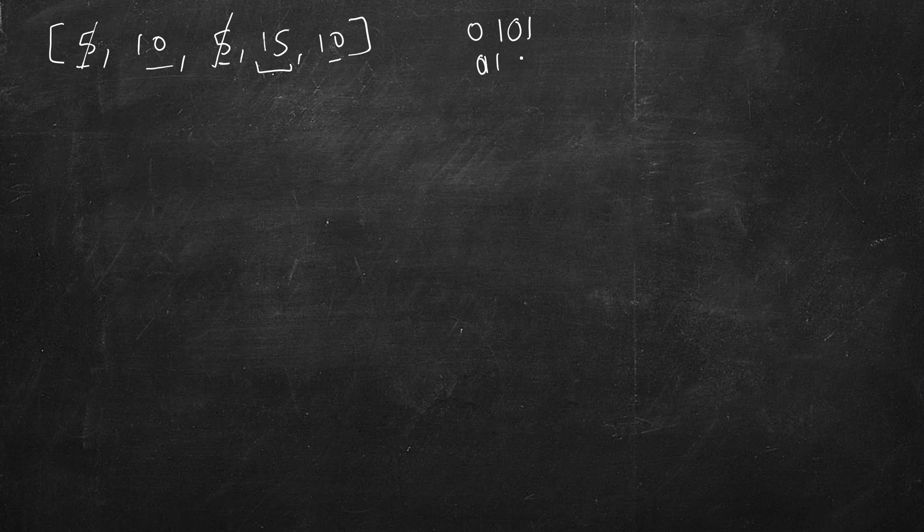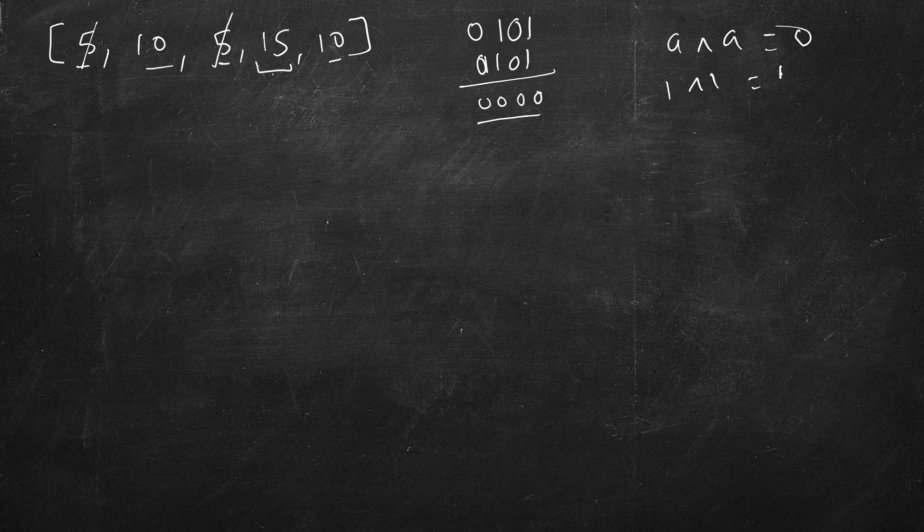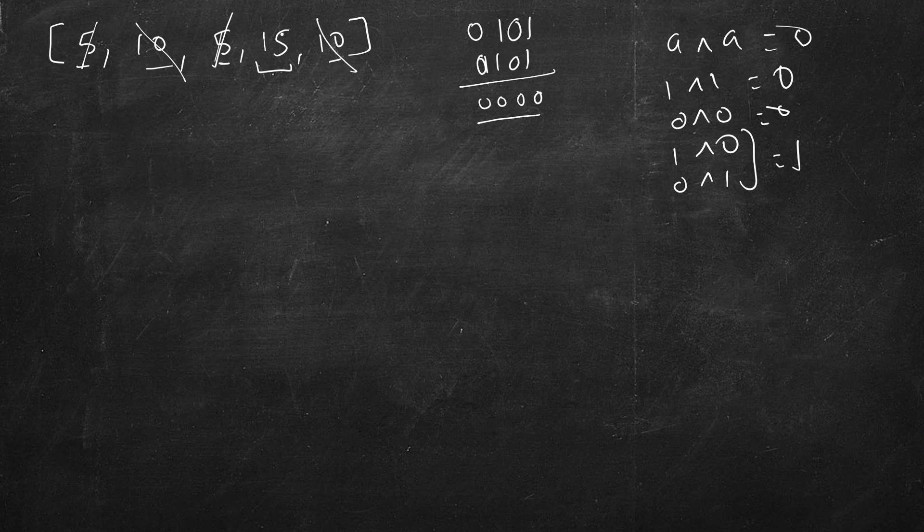So this 5 XOR 5, the bits will be 1 0 1. When we take XOR with 0 1 0 1, it will become 0 0 0 0. So a XOR a is 0, 1 XOR 1 is 0, 0 XOR 0 is 0, 1 XOR 0 or 0 XOR 1 is 1. We will use the same concept. This 5, 5 will get cancelled, 10, 10 will get cancelled, and in the end we will have 15.